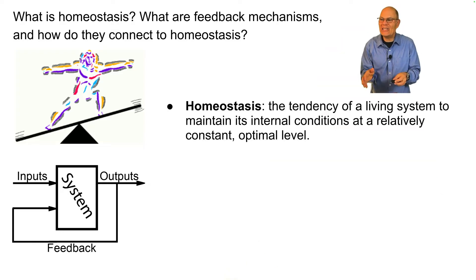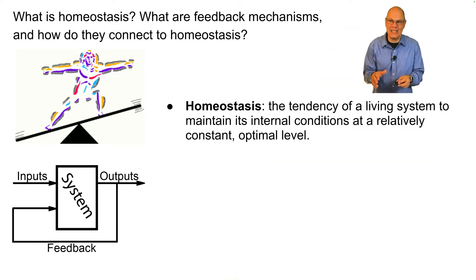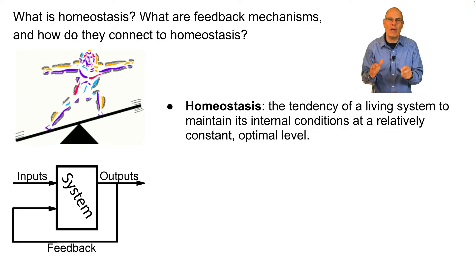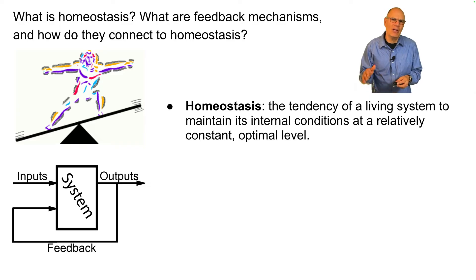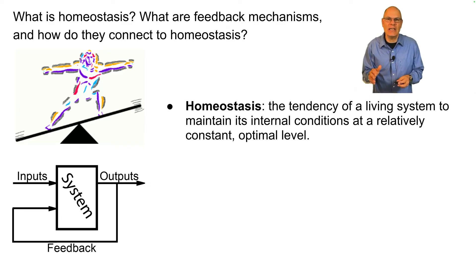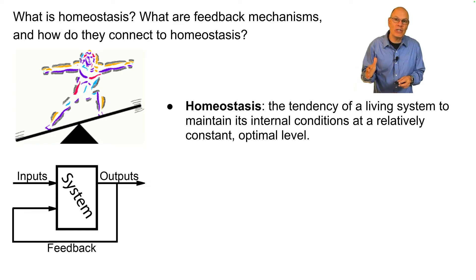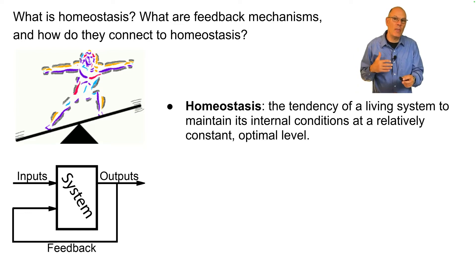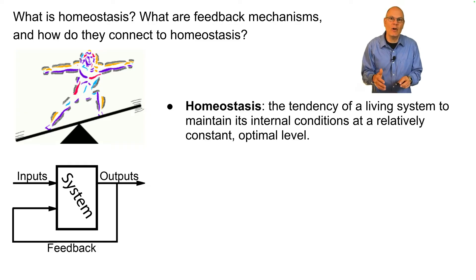Homeostasis is the tendency of a living system to maintain its internal conditions at a relatively constant optimal level. Your body temperature, for example, stays around 37 degrees Celsius — 98.6 Fahrenheit — despite fluctuations in the external temperature. The changes in your body to maintain that temperature are a great example of homeostasis.